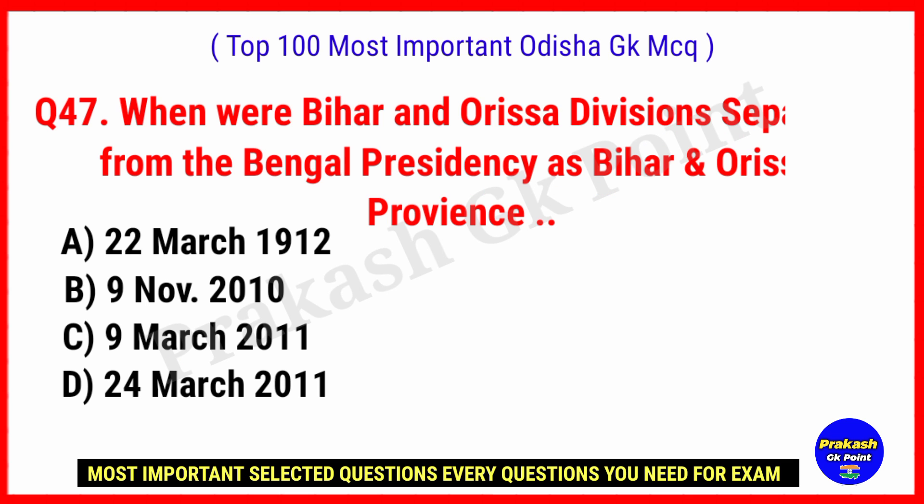When were Bihar and Odisha divisions separated from the Bengal Presidency as Bihar and Odisha Province? Answer: Option A, 22 March 1912.